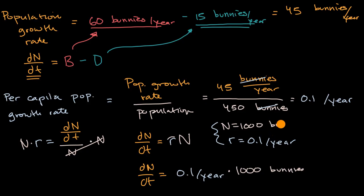And so this is going to be equal to 1,000 times a tenth is 100. It's 100 bunnies per year.